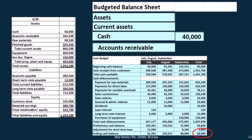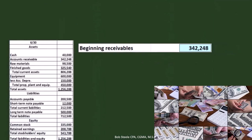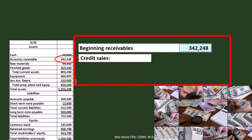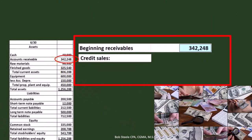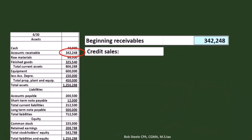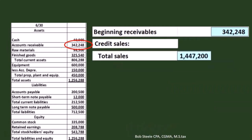Next we have accounts receivable. We need to do a calculation to figure out the ending balance. We start with the beginning receivable from last period's balance sheet — $342,248. Then we add credit sales. The problem gives us total sales from the sales budget of $1,447,200, and the problem states that 70% of that was on account, so those are sales that increase accounts receivable.